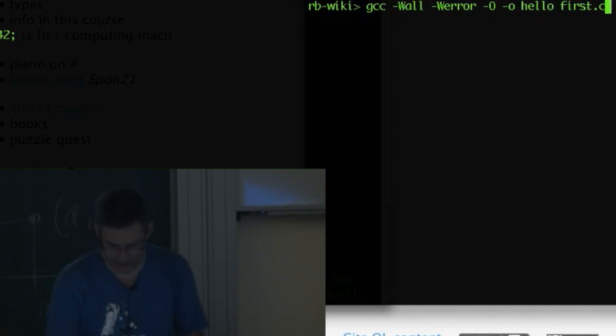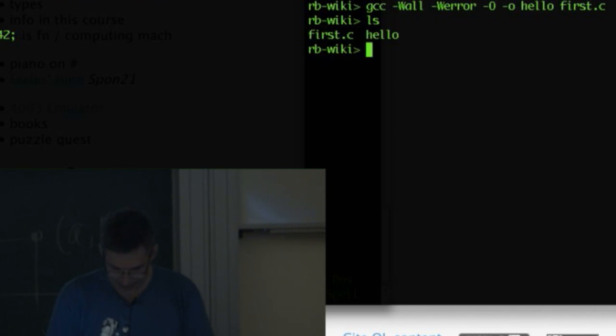It compiled it. Oh, it didn't generate any problems even though I told it to tell me about every single thing that could possibly be wrong. It didn't tell me anything. How lucky is that? That'll never happen ever again. LS prints all the names of the files in the directory so there was first.c the file I created and a new file which was just made called hello. What does hello do? Should we run it?